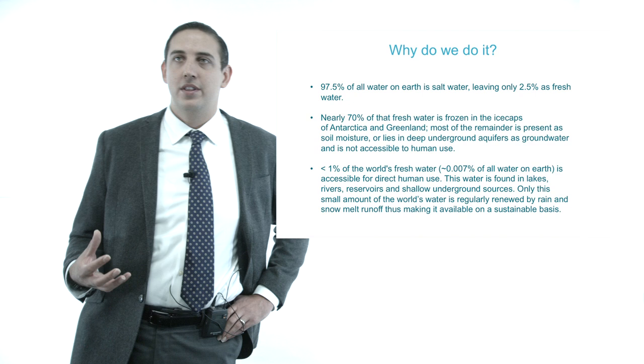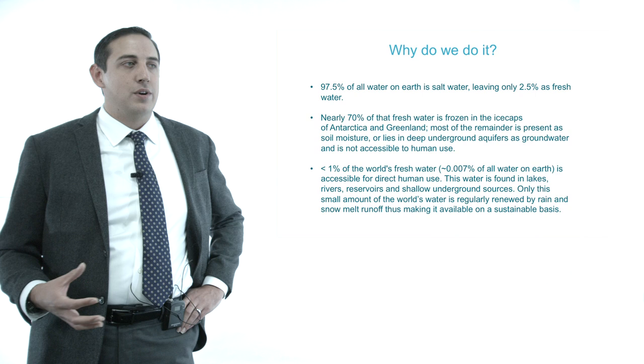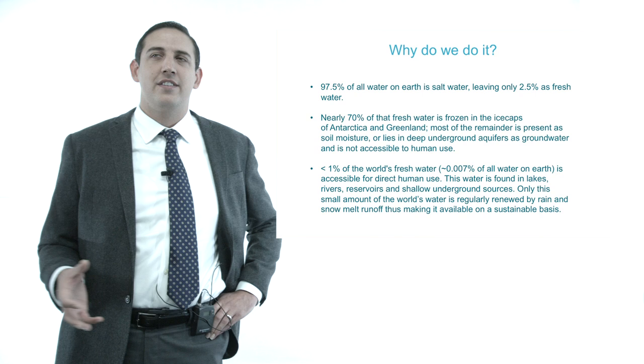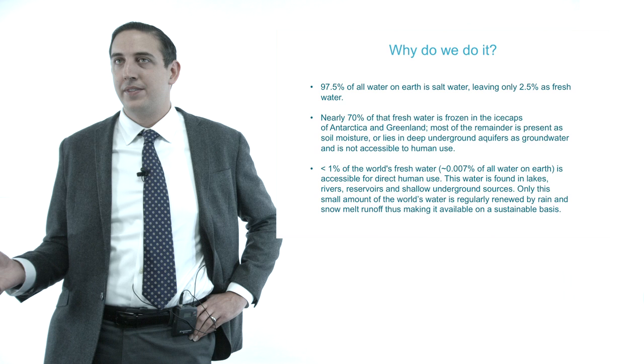So why do we do this? 97.5% of all water on Earth is salt water. We only have about 2.5% of all available water as actually fresh water. Of that, the majority is actually frozen in Antarctica. Here in the United States, there are about 15 states that are actually running out of water. Almost 25% of all fresh water is actually found in the U.S. Great Lakes. So water conservation is really the major driving force behind developing rain water system technologies.